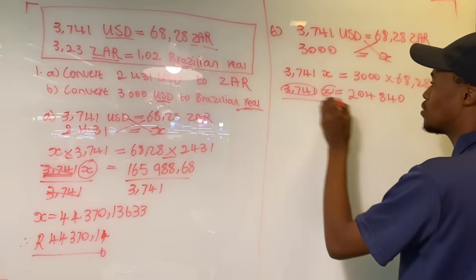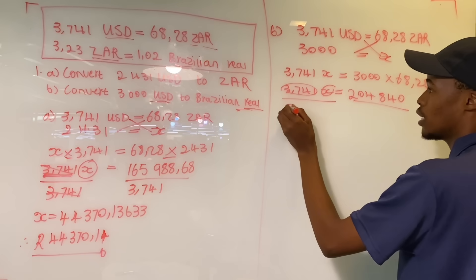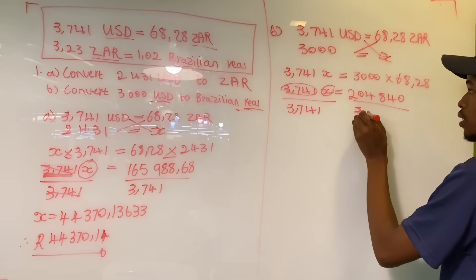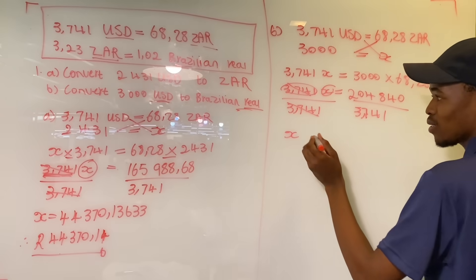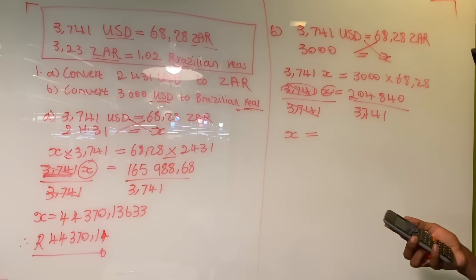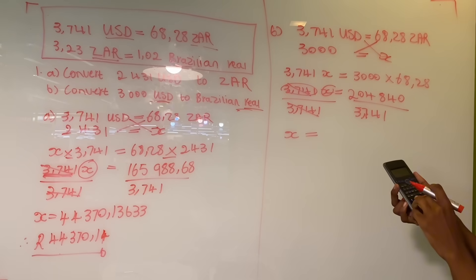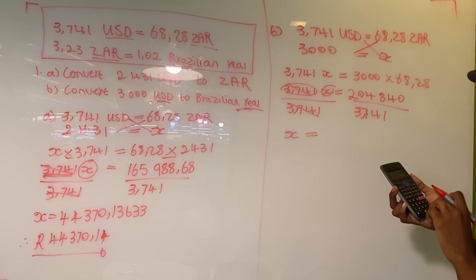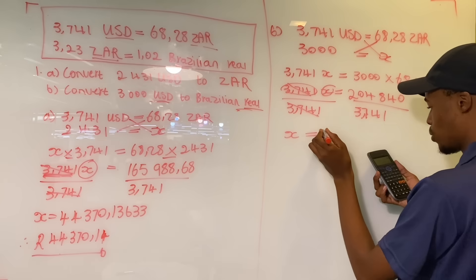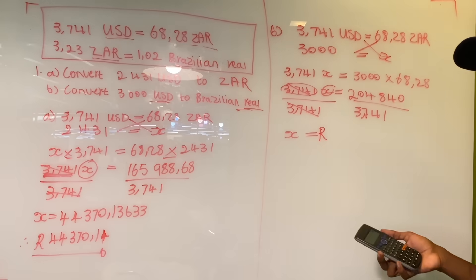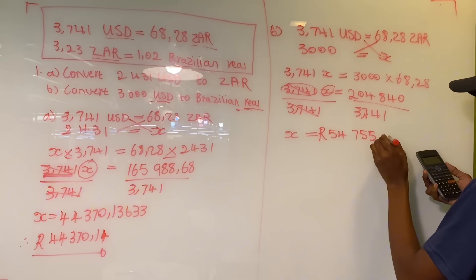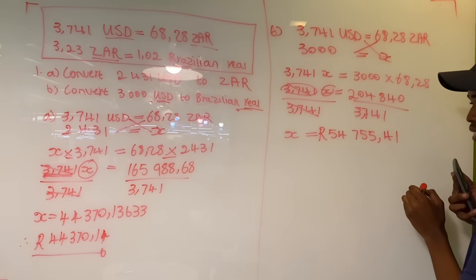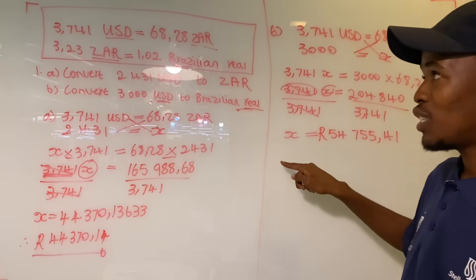We want to eliminate the coefficient to be left with x. We divide both sides by 3.741. The 3.741 cancels on the left, so we're left with x. Then we divide 204,840 by 3.741, and that leaves us with a total of 54,755 rands 41 cents. We've successfully converted the US dollars to South African rands.